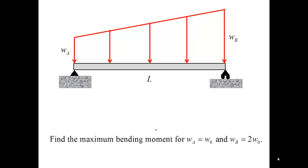In this problem, we have a beam supported by a pin on the left, a roller on the right. The beam is subjected to a trapezoidal load. And our task is to determine the maximum bending moment.